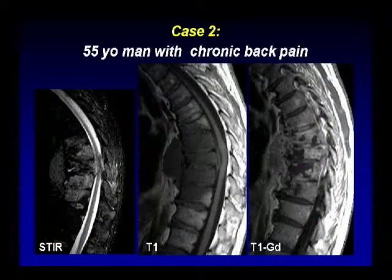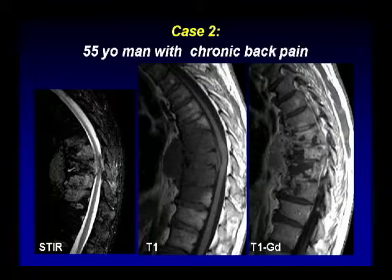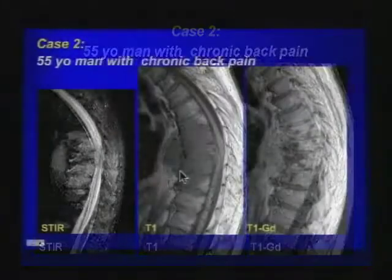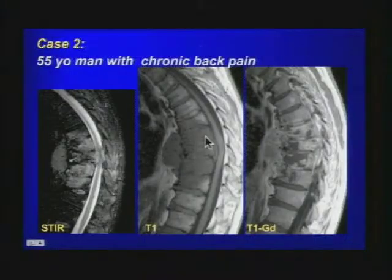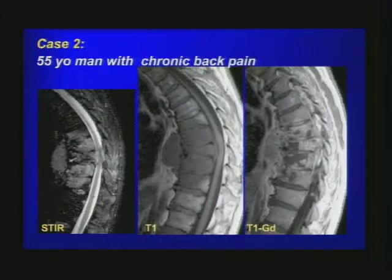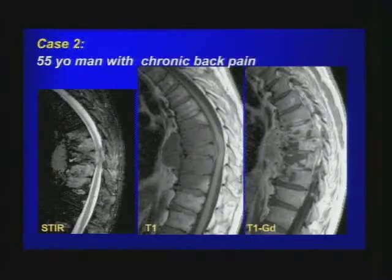Case number two is a 55-year-old man with chronic back pain. You see a lesion located in the vertebral bodies of the thoracic spine, covering several vertebral bodies, with a relatively large soft tissue mass located anteriorly. Keep in mind these findings could be both infections or the differential diagnosis of infection.